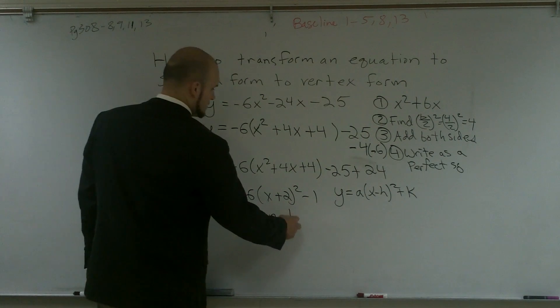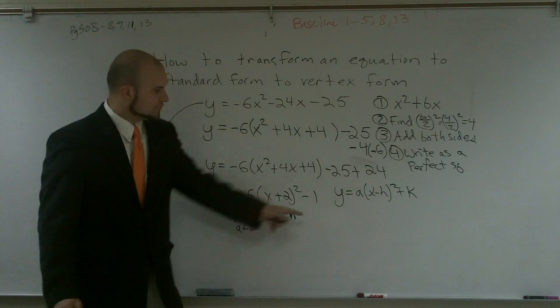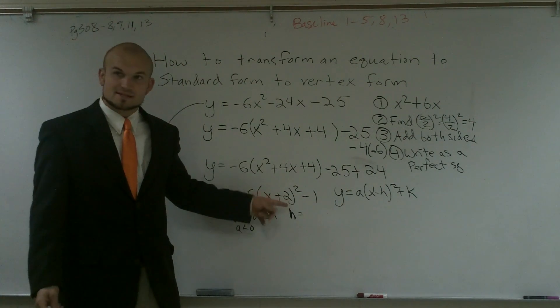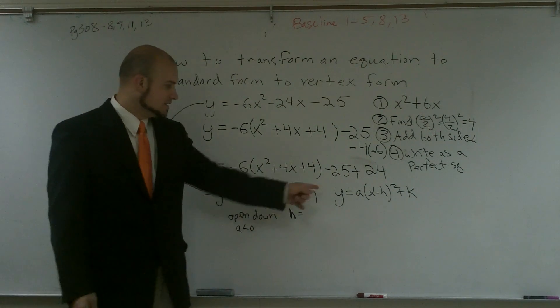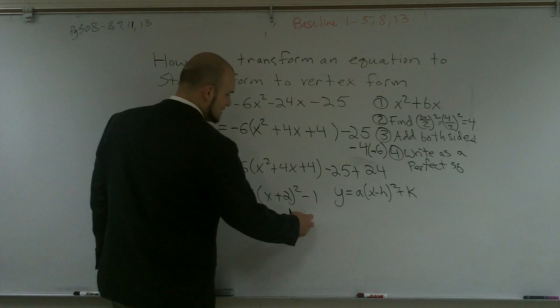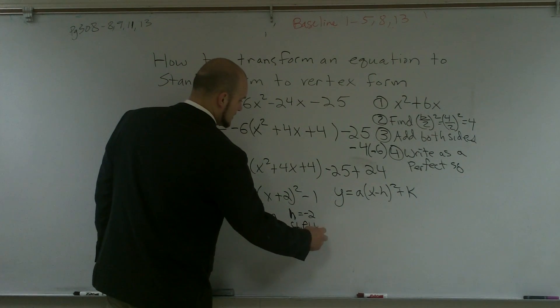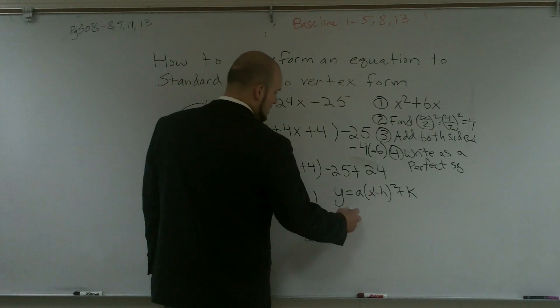If this is a positive 2, that means this is originally a negative, because a negative and a negative would make a positive. So my h is actually going to be negative 2. So you're actually going to shift left 2. And my k is a negative 1, so I'm going to shift downward.